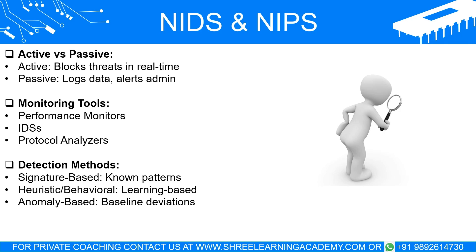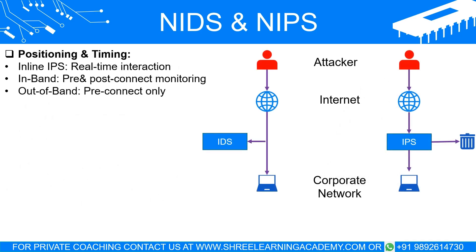Types of detection methods — Signature-based: This is like recognizing a criminal from a wanted poster. Signature-based systems have a database of known attack patterns and match incoming traffic against this database. Heuristic/behavioral: The system learns what normal behavior looks like and flags anything that seems out of the ordinary. Anomaly-based: These systems maintain a baseline of normal network behavior and alert administrators if they notice a deviation.